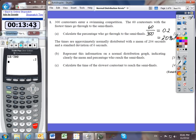The times are approximately normally distributed with a mean of 204 seconds and a standard deviation of 6 seconds. Part B asks us to represent this information on a normal distribution graph. So there's my normal curve. We're supposed to clearly indicate the mean, which is at 204. And I'm just going to label my axis: swim times. It's always a good idea to label your axis and give the unit, in this case, seconds.